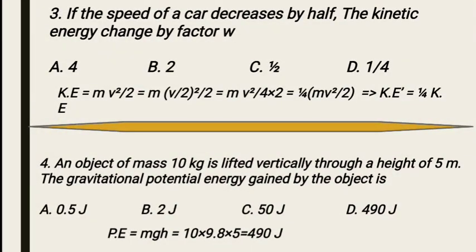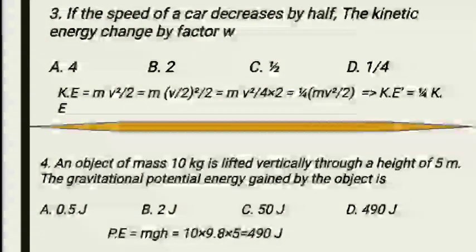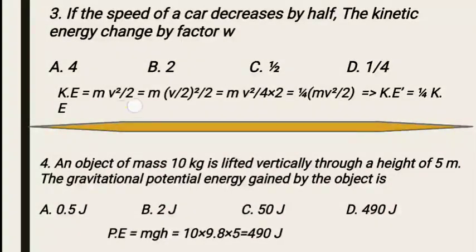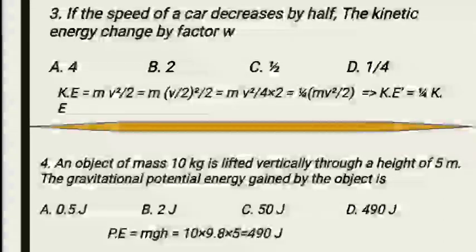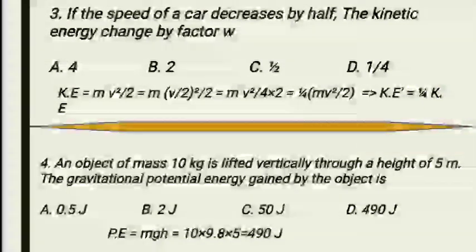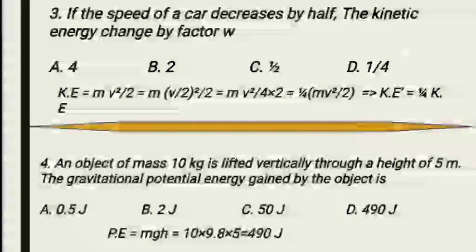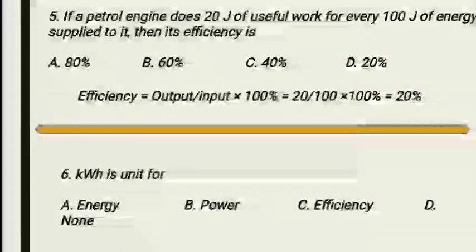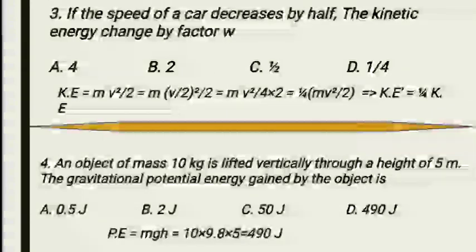Since speed v decreases to v/2, we substitute: KE = ½m(v/2)². This gives ½m × v²/4, which equals (1/4) × ½mv². Comparing with the original kinetic energy, the new kinetic energy is 1/4 of the original. So the kinetic energy changes by a factor of 1/4. The correct option is Option D.